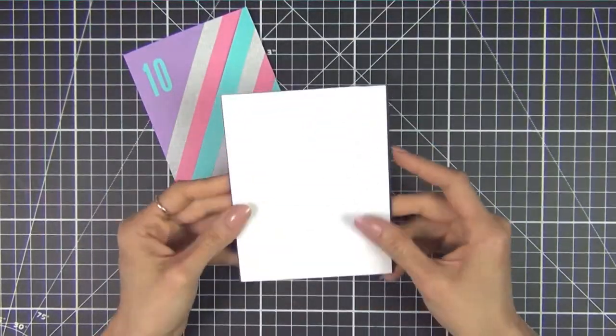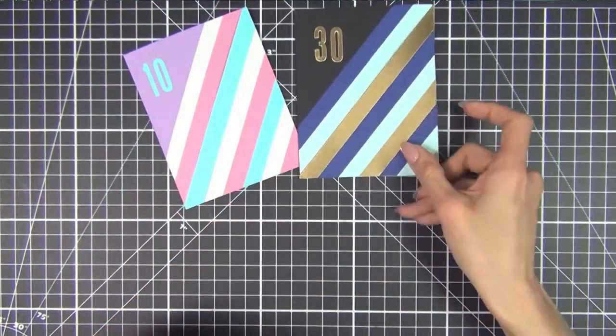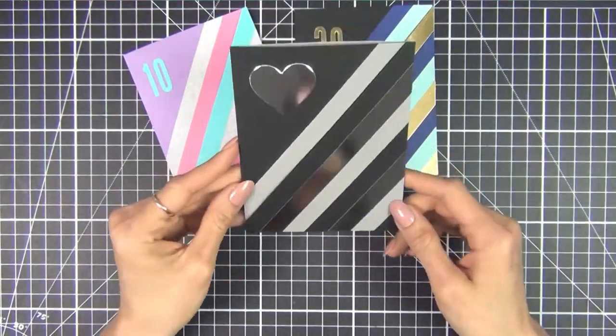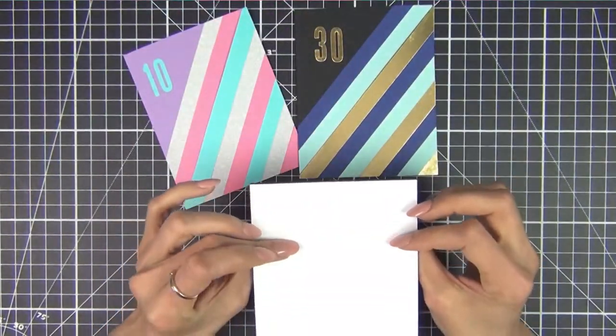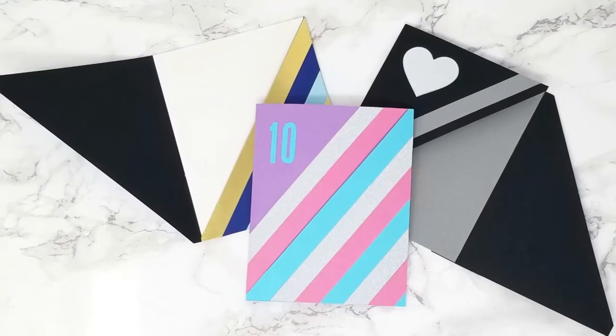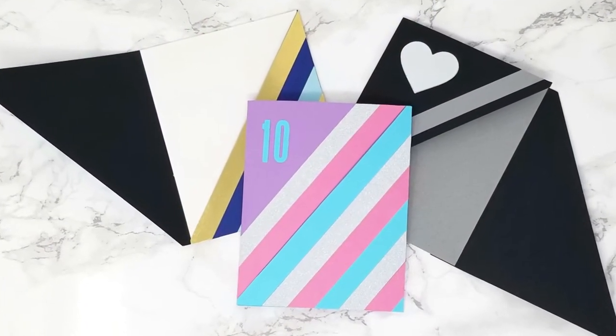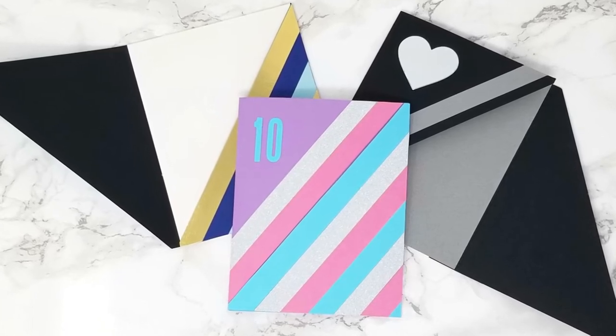Alright that's it, here is the card I made for my fiancé, the one that inspired this video. I also made a grayscale one but instead of doing numbers I added a heart. This style of card is so fun to make and surprisingly easy to put together.